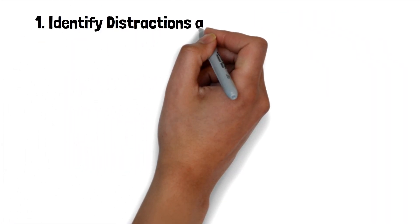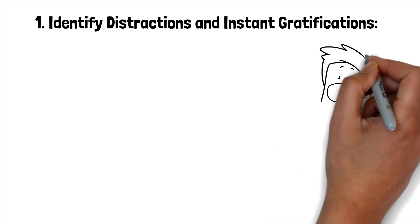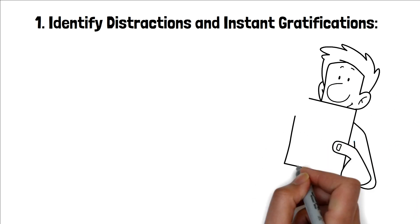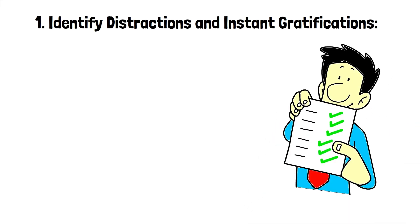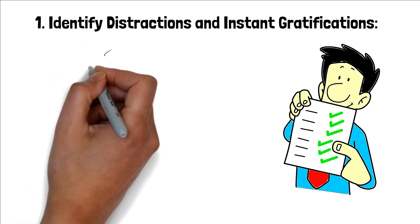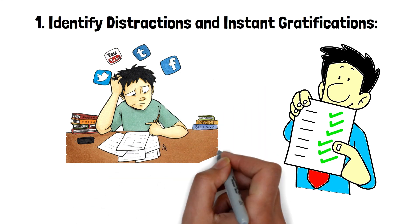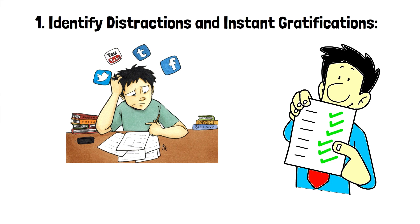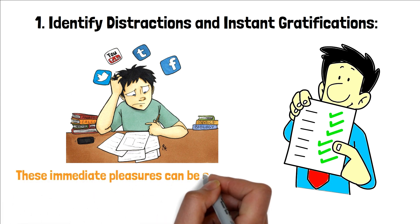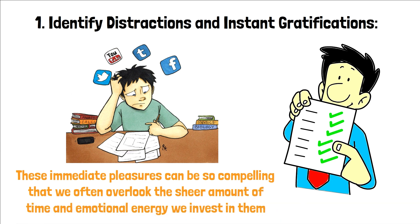Identify distractions and instant gratifications. In our quest to initiate a dopamine detox, the first step is awareness. Our daily lives are intertwined with numerous activities that, unbeknownst to us, provide quick bursts of dopamine, be it the relentless scrolling through social media, the suspense-filled TV shows, exhilarating video games, or the tantalizing taste of junk food. These immediate pleasures can be so compelling that we often overlook the sheer amount of time and emotional energy we invest in them.